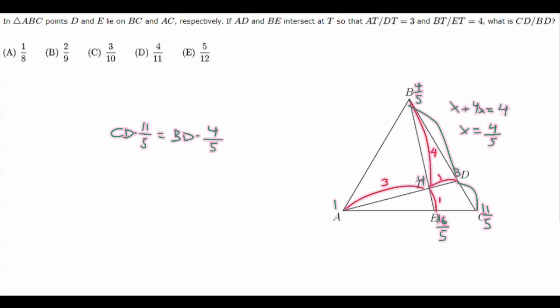we can divide by 11 over 5 on both sides to get CD over BD equals, let's see, 4 over 5 all of that over 11 over 5. These two 5s cancel out. And we get the answer of 4 over 11.